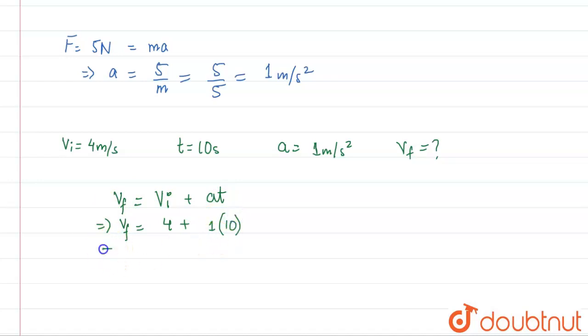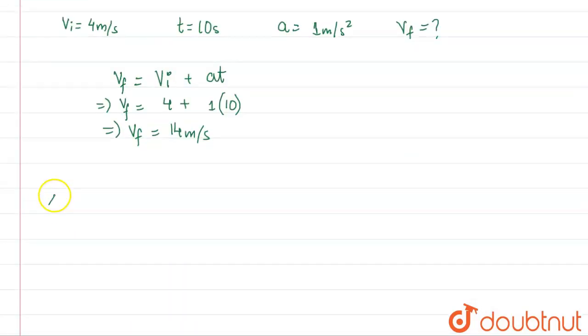So now we'll find out the change in kinetic energy. Change in kinetic energy will be half into m into v_final squared minus half into m into v_initial squared. Or you can say change in kinetic energy is KE final, which is half mv square final, minus half mv square initial.